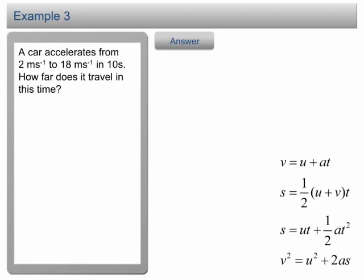Another problem that always confronts students is how to distinguish the initial and final velocity. Both of them have the same unit. How do we know which one is initial and which one is final? Frankly speaking, I don't have a perfect solution for this. The only suggestion I can give is to draw two points on a piece of paper and then ask yourself at what velocity it starts and at what velocity it ends.